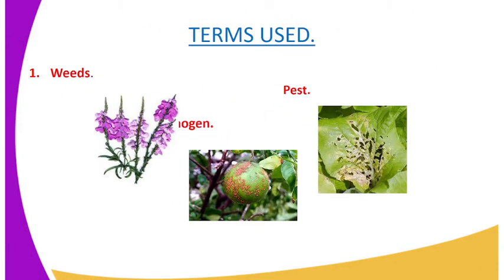The terms used in this lesson are: weeds, pathogen, and pest. A weed is any plant whose economic advantages are few and economic disadvantages are many, and it is growing at a place where it is not intended to grow.